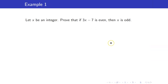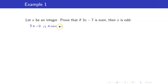For example, let X be an integer. Prove that if 3X minus 7 is even, then X is odd. This is an example of a problem wherein the original implication is more difficult than its contrapositive, because here you are starting with 3X minus 7 is even and then you want to show that X is odd.